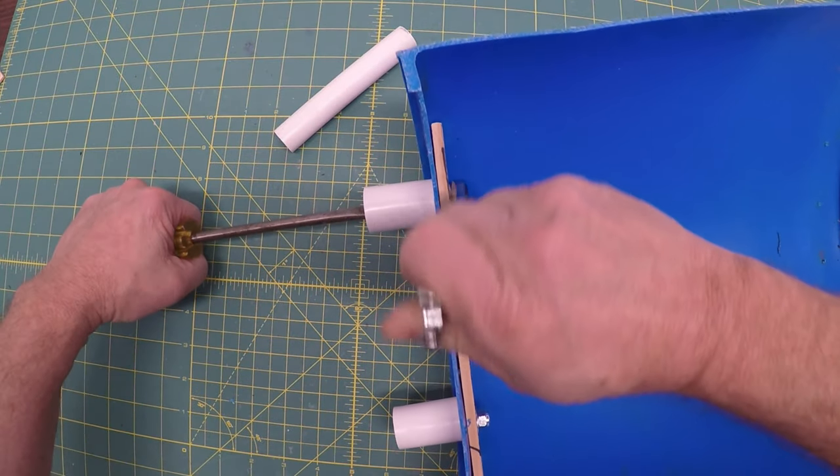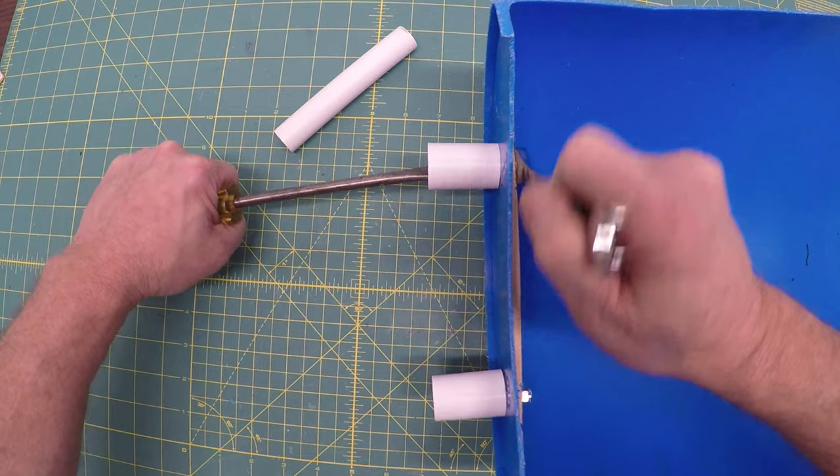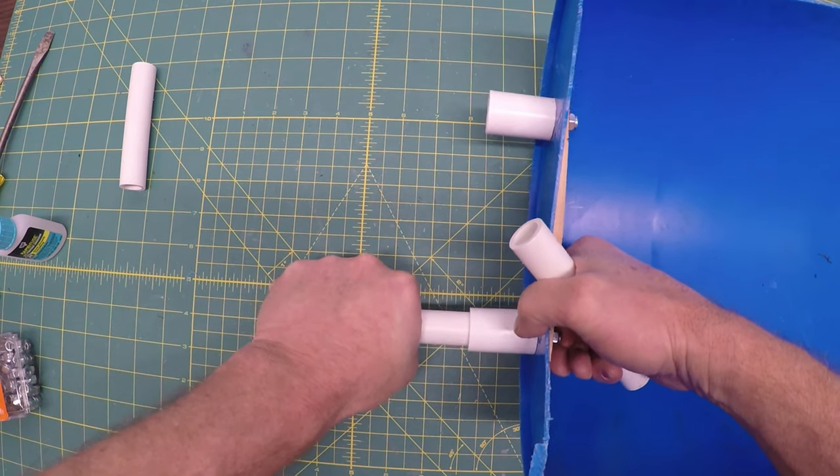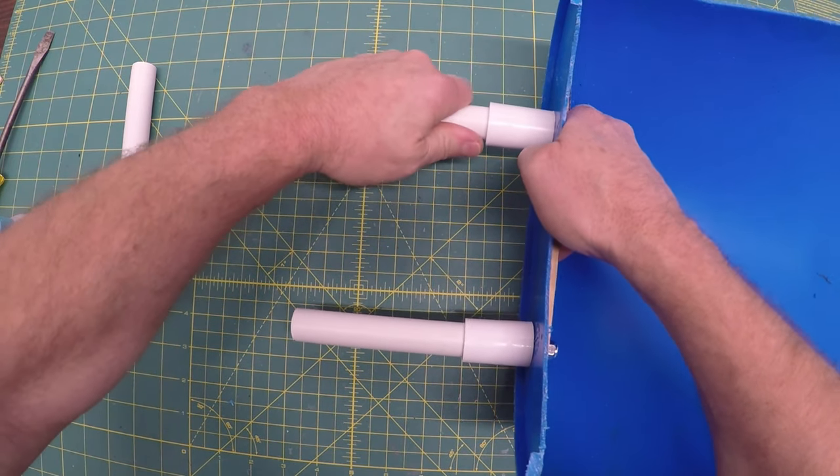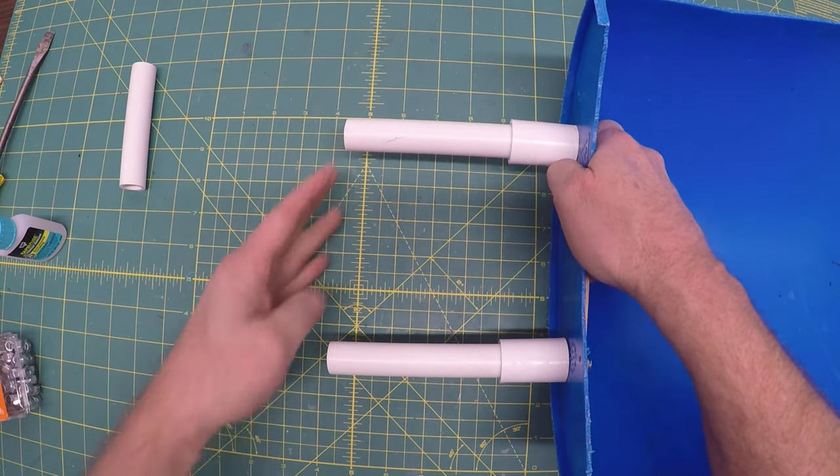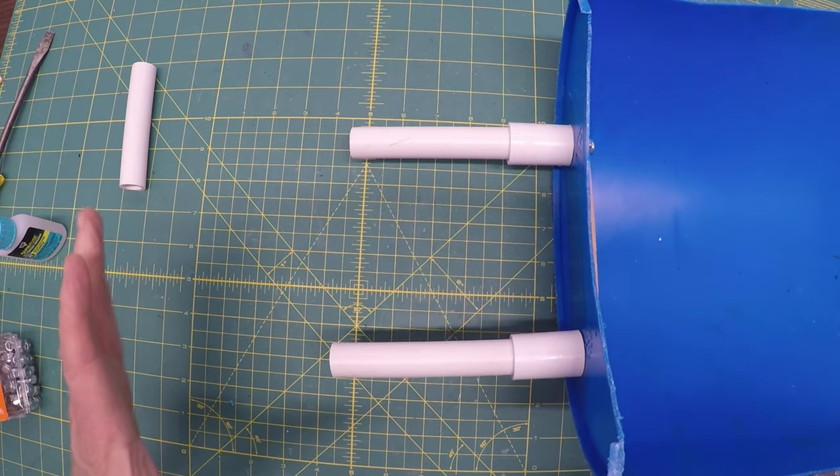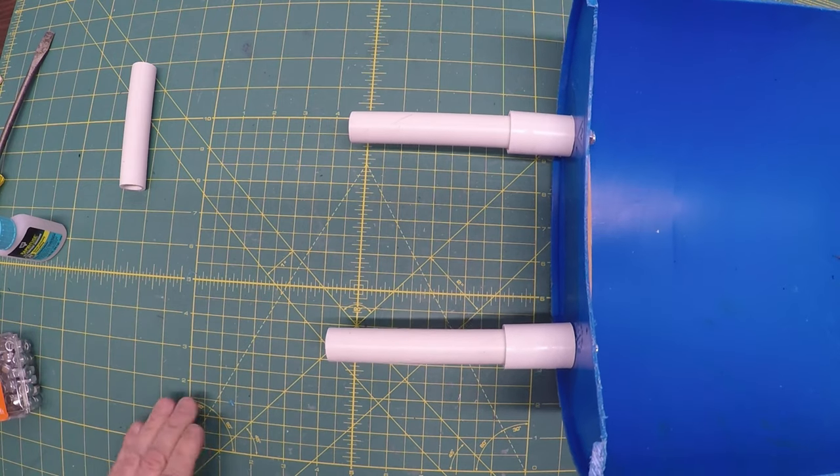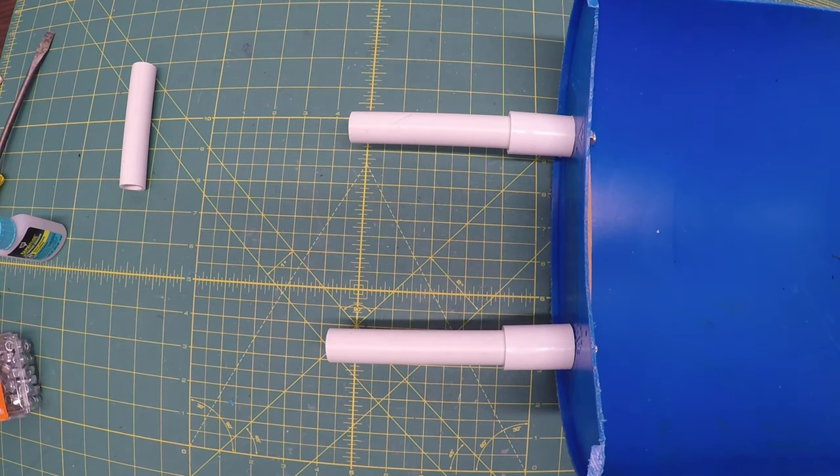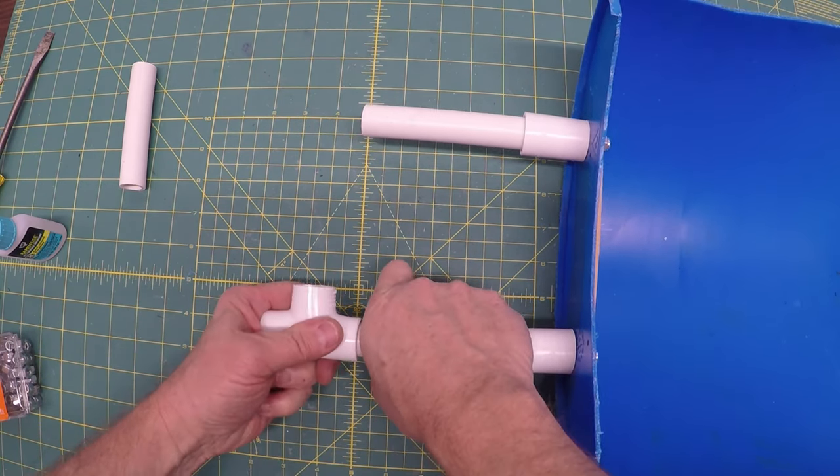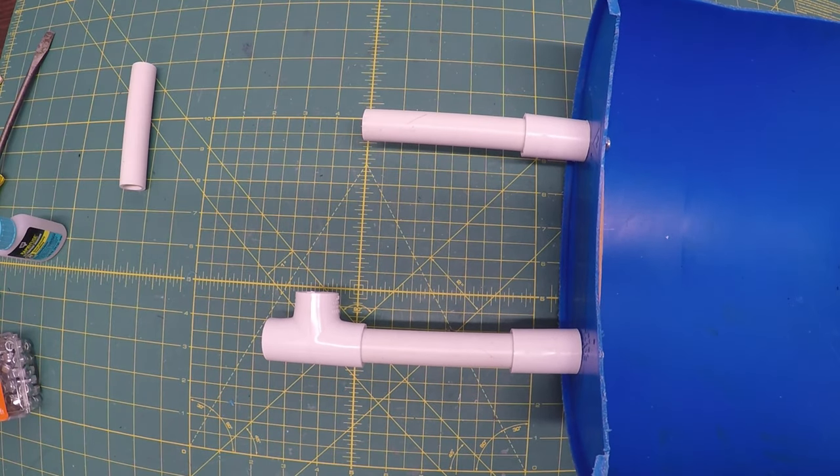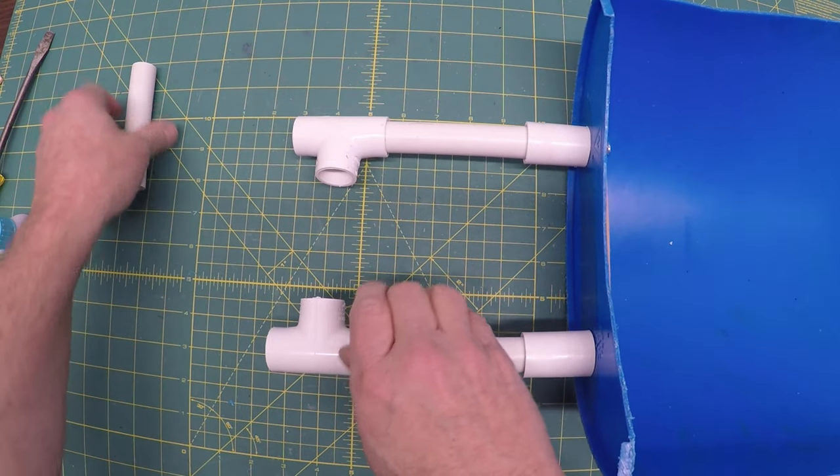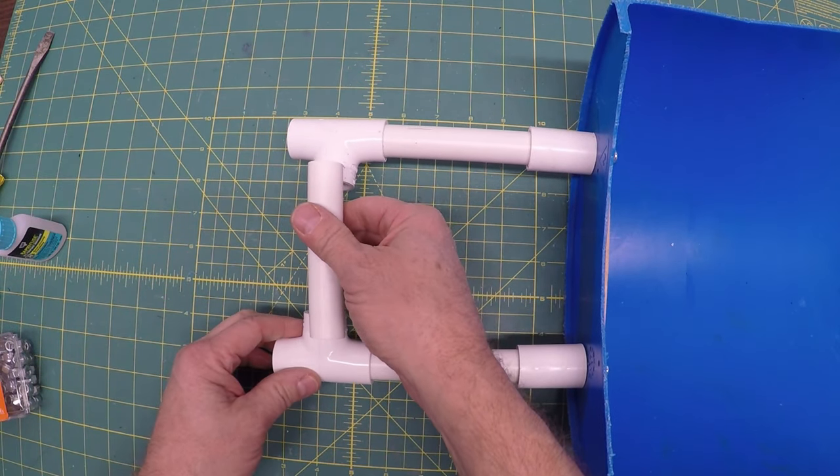Ideally, you want a couple threads showing through the nylon lock nut. You can glue this all together, but what I would recommend is you try out the five inch pieces and see how it works for you. If for some reason you want them a little bigger or longer, then it's easy to pop out. If you glue them in place, then you're kind of committed. Two T's, again, you can glue those in, but I'm just going to hold them fast at this point. Then this is the piece that goes in here.